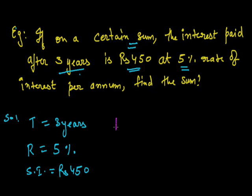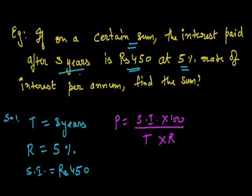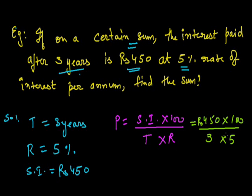The principal is equal to simple interest into 100 whole upon time period into rate of interest. Substituting the values: 450 into 100 whole upon 3 into 5. If we calculate it, it comes out to be Rs. 3000. So the principal is Rs. 3000.